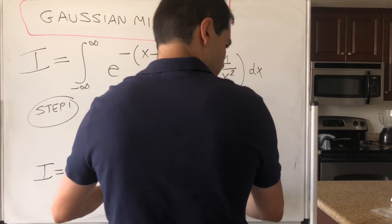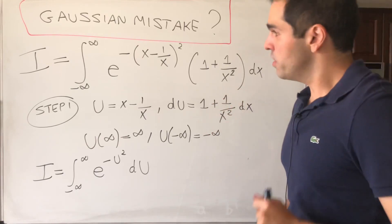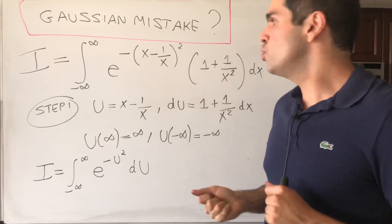Which is just the typical Gaussian integral. So that's on the one hand by just using the u substitution.